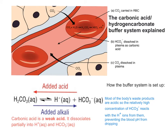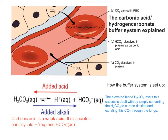Seeing as most of the body's metabolic waste products are acidic, the relatively high concentration of hydrogen carbonate reacts with the H+ ions from these waste products, preventing the blood pH from dropping. This will increase the H2CO3 levels in the blood, so what the body does is convert the H2CO3 to carbon dioxide and exhale it through the lungs, getting rid of the carbon dioxide waste.